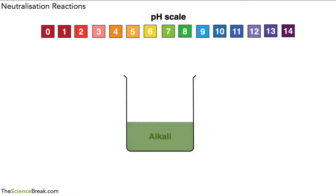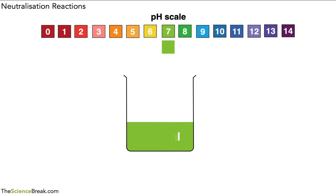So this becomes neutral — the color changes — and if we look at the color change on our pH scale it matches with pH 7, which as we said previously is a neutral solution. This reaction is called a neutralization reaction.